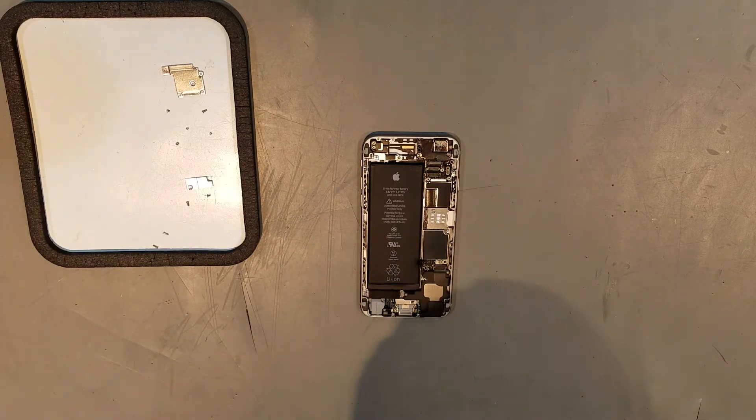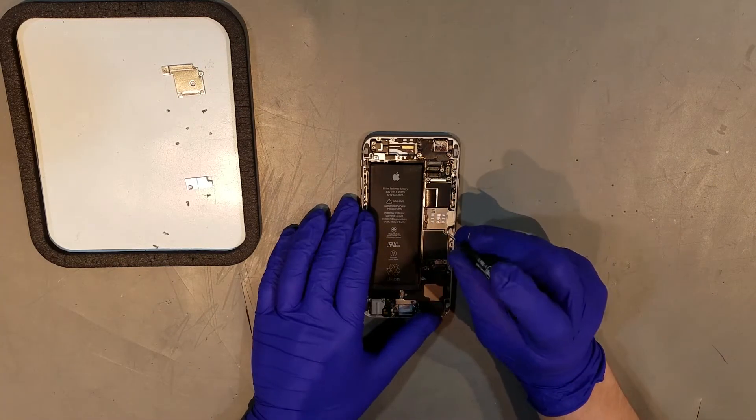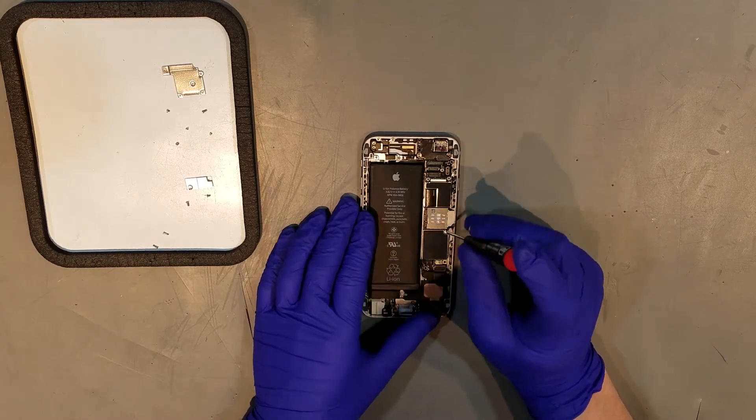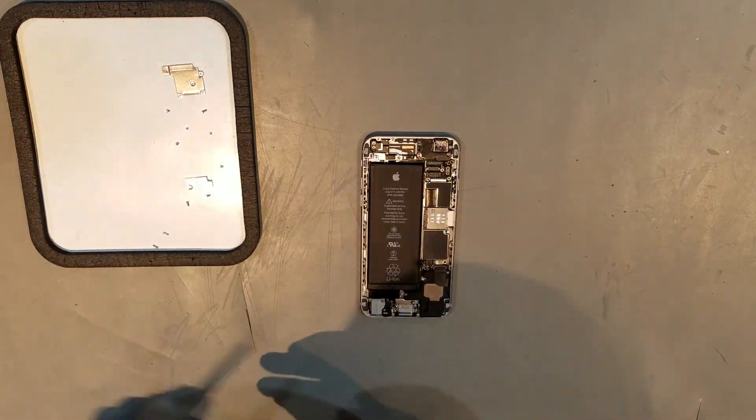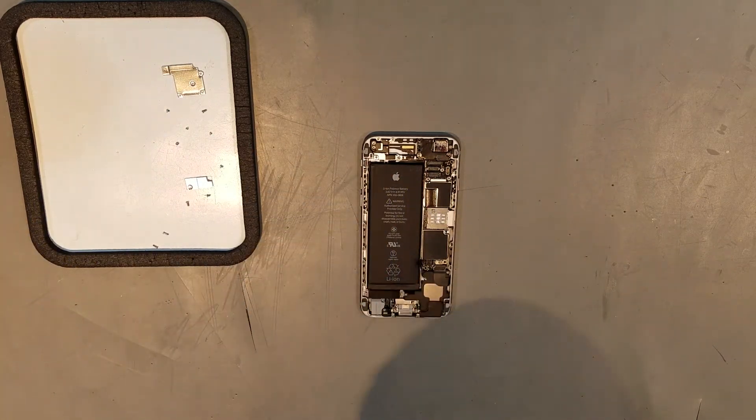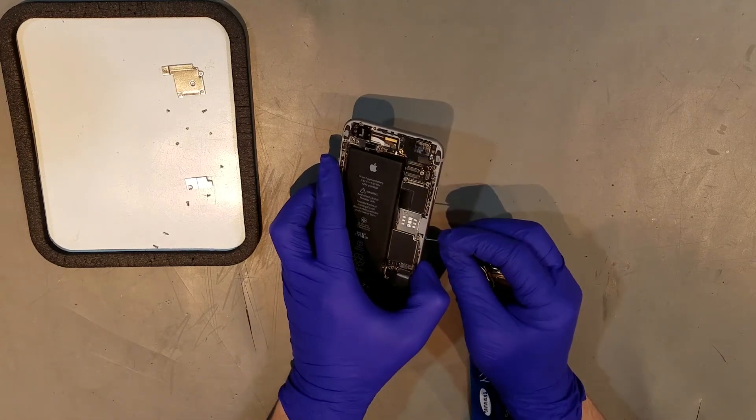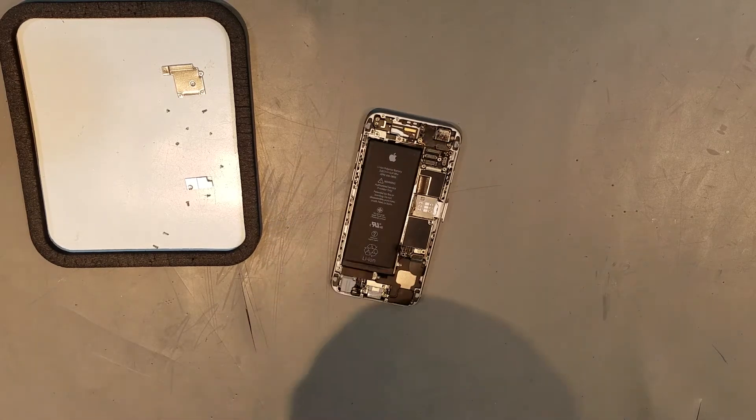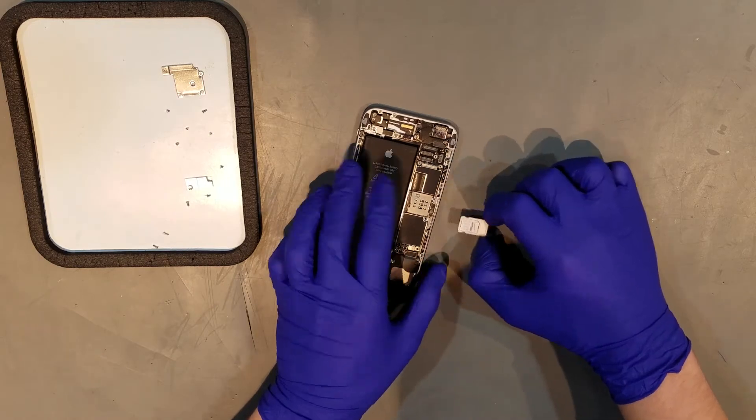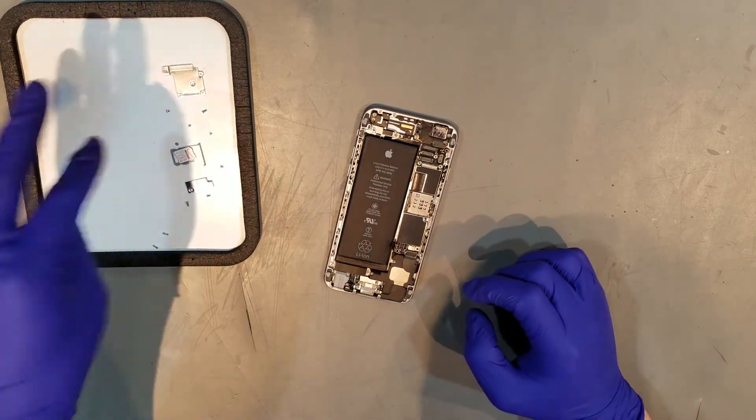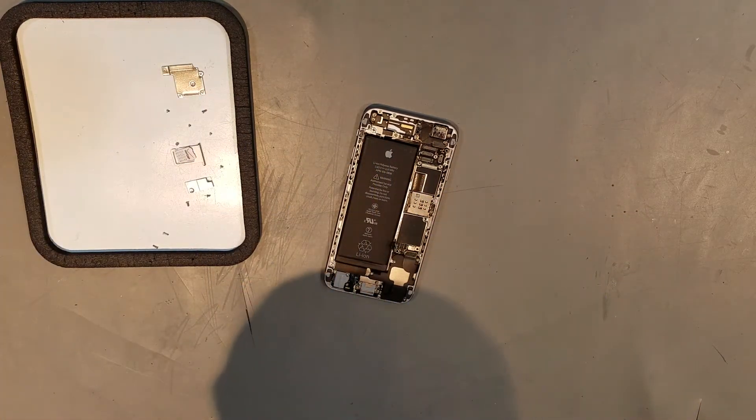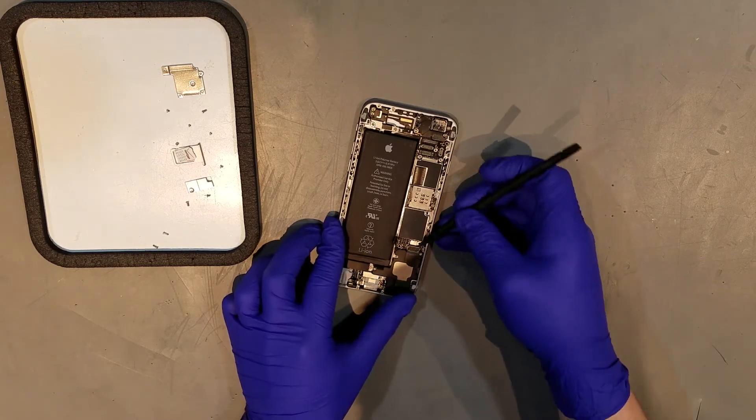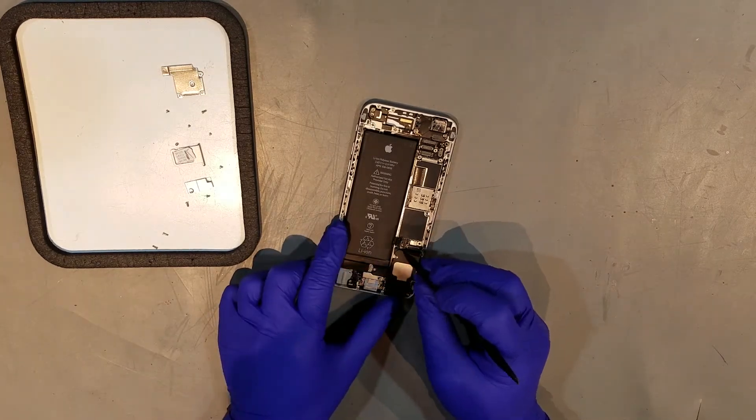To begin removing the logic board, you can start by removing the Phillips screw that's located directly underneath the SIM card tray, and remove the tray as well. To completely detach the bottom of the board from the phone, unclip the charge port flex and the clip for the cellular antenna.